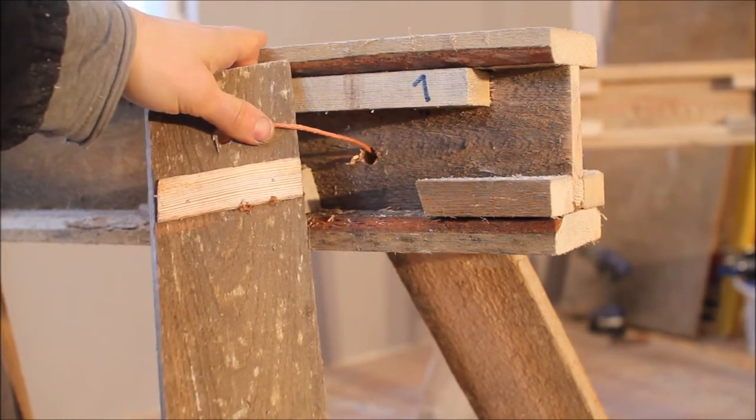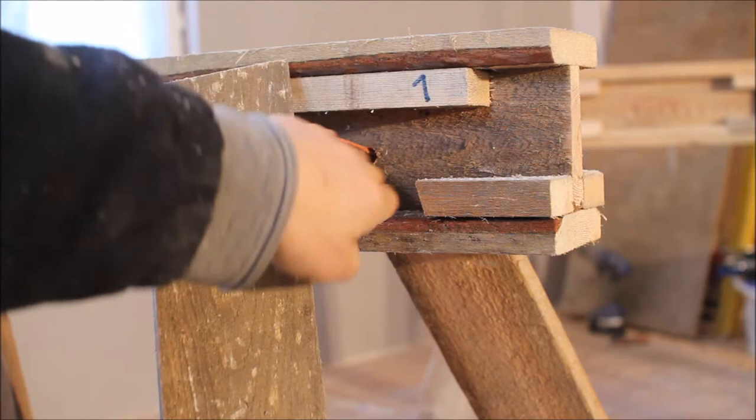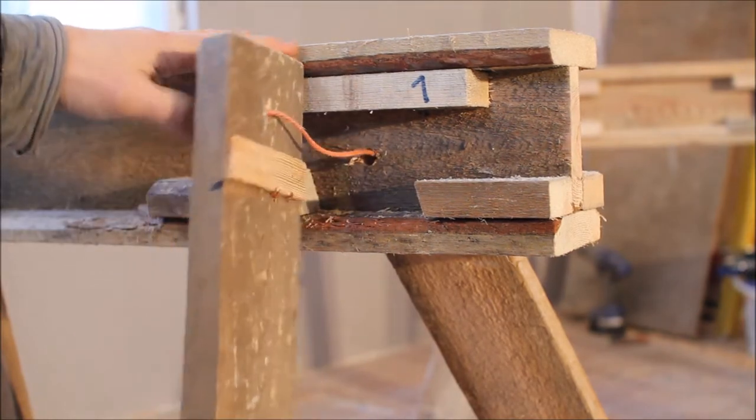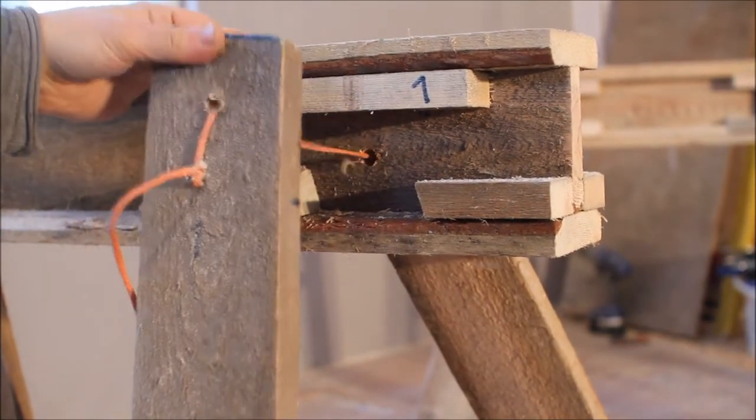And behind the leg there's a strip of wood that goes against the saddle, and that prevents the leg from coming off.